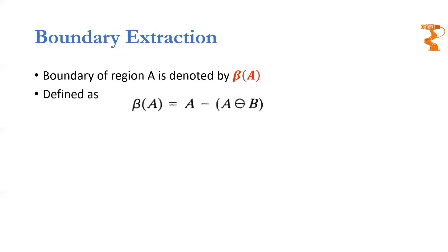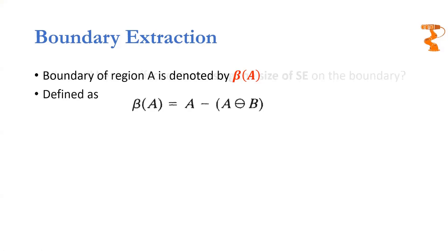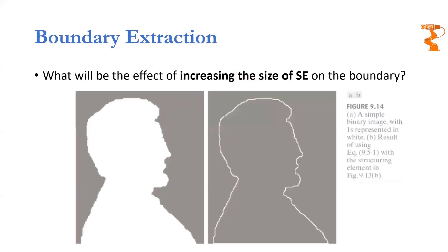you are going to get the boundary of the original object which the erosion process eroded. This is the mathematical equation for boundary extraction, and we can easily see how it's going to happen.